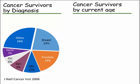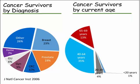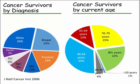Looking at the cancer survivorship population by current age: less than 20 years of age is 1%, 20 to 39 years is 4%, 40 to 64 years is 35%, 65 to 69 years is 13%, 70 to 79 years is 25%, and 80-plus years is 20% of the population. Importantly, 65-plus years of age represents more than 50% of our cancer survivors.